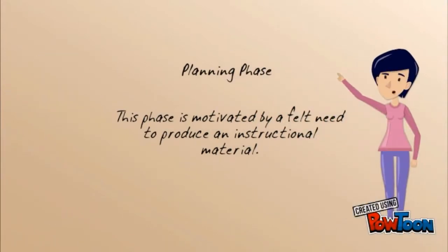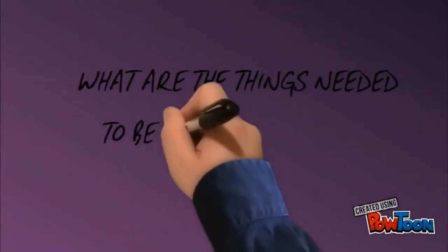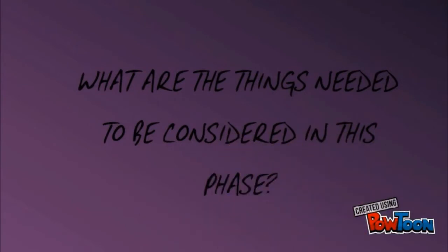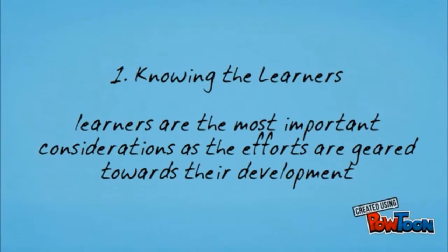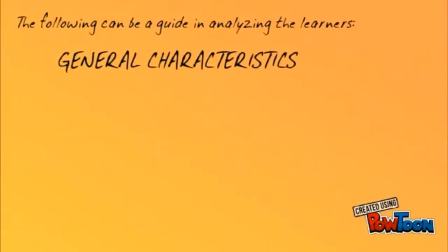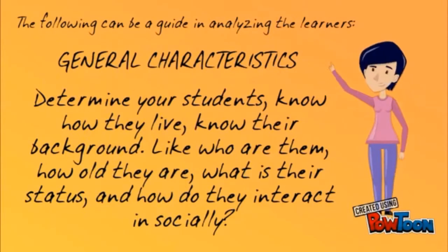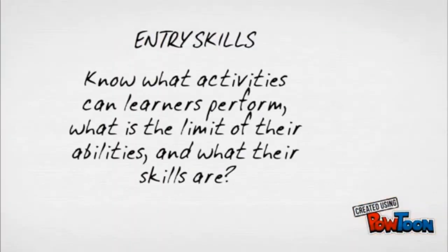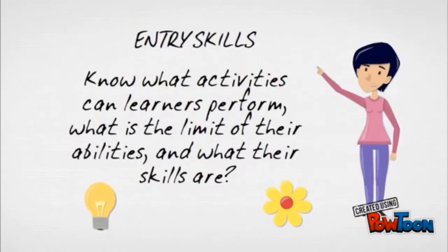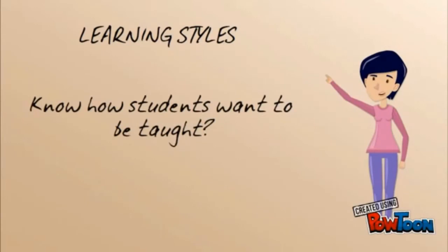Planning phase: This phase is motivated by a felt need to produce an instructional material. Things to consider: 1. Knowing the learners — learners are the most important consideration. As efforts are geared towards their development, consider: General characteristics — determine your students, know how they live, know their background, how old they are, what is their status, and how they interact socially. Entry skills — know what activities learners can perform, the limit of their abilities, and what their skills are. Learning styles — know how students want to be taught.